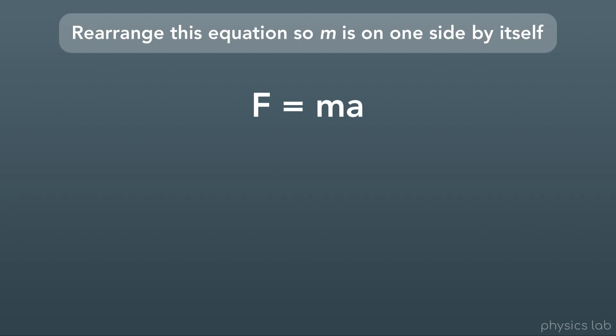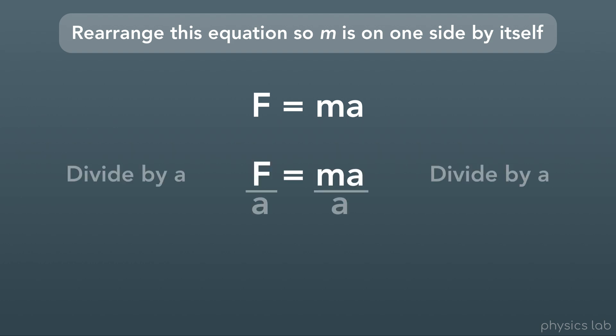Let's try rearranging an equation that only has variables. We have f equals ma, which stands for force equals mass times acceleration. Say we want to get m all by itself on one side — we divide both sides by a. On the right, a divided by a equals 1, so we're left with m times 1, which is just m. Now we have f divided by a equals m, and this equation is still true.